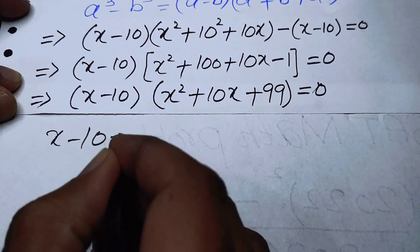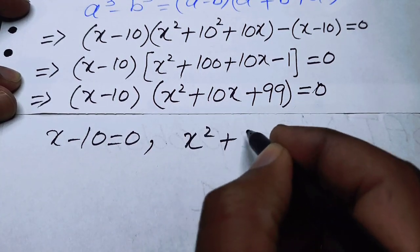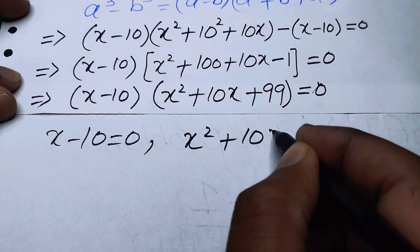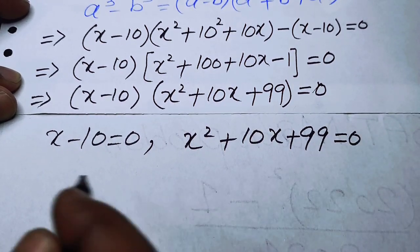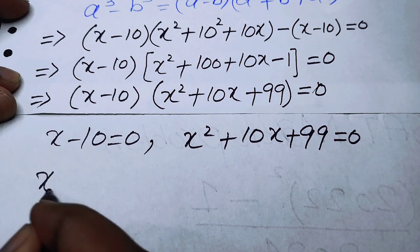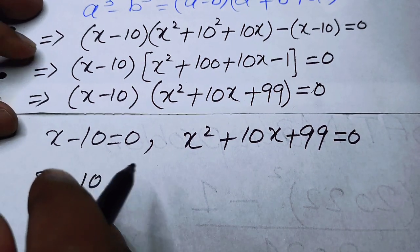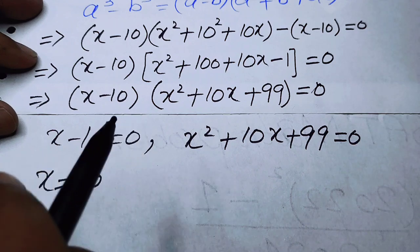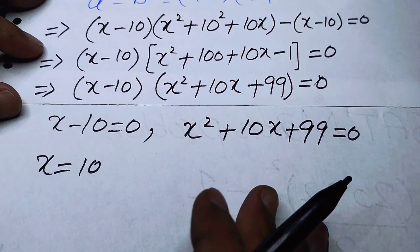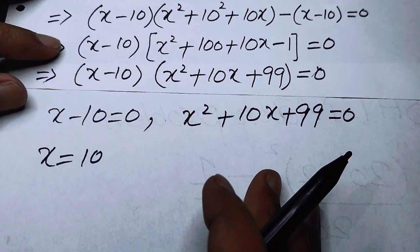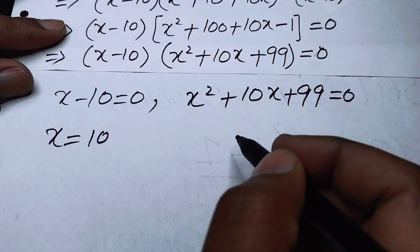Setting each factor to zero: x minus 10 equals 0 gives x equals 10. For the quadratic x squared plus 10x plus 99 equals 0, we note that in this question we need only real roots, so we focus on finding the real roots.